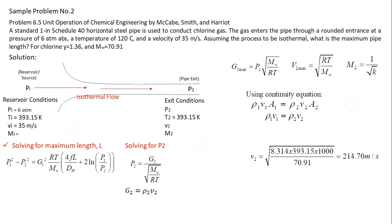We can cancel area, because the pipe cross-sectional area is constant throughout the flow. Solving for density 1 using ideal gas equation, we have 13.19.